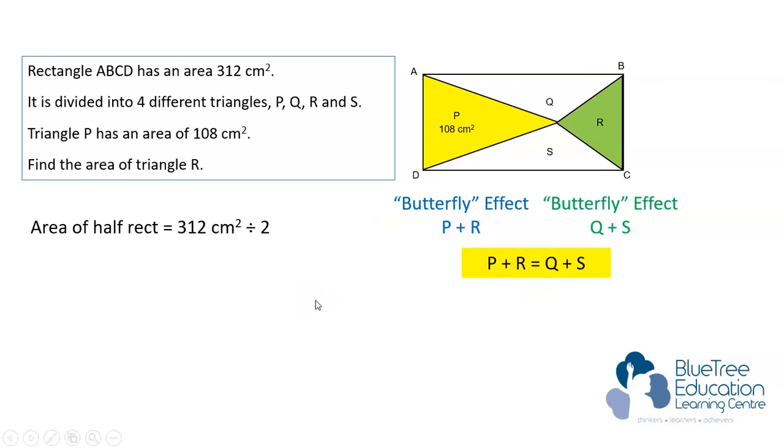Let's find the area of half a rectangle. It's 312 divided by 2. That will give you 156 cm². If triangle P is 108, in order to find the area of triangle R, we will take 156 minus 108. And the answer is 48 cm².